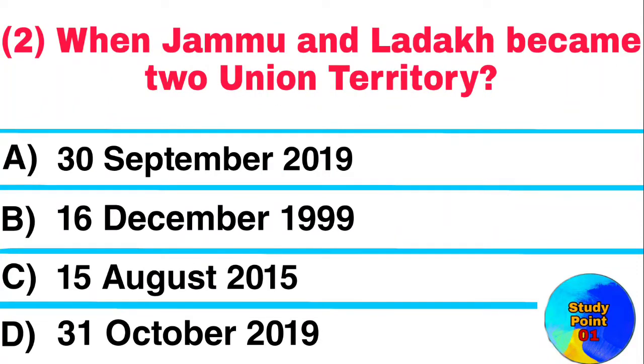Question: When did Jammu and Ladakh become two union territories? Answer: The 31st of October 2019.